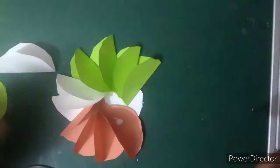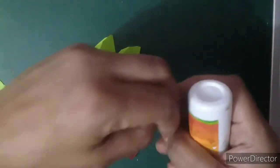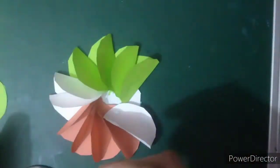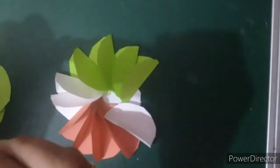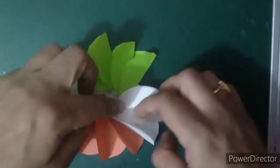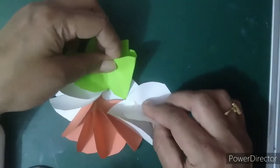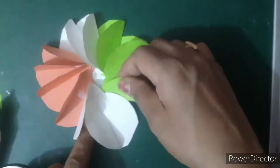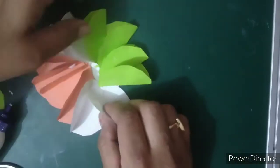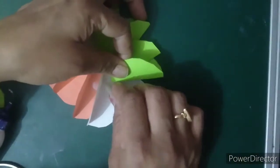Now remaining 2 white sheets I will put here like this. And I will take this part, open this part, open up this green part again, and put my white sheet inside this green, like this.